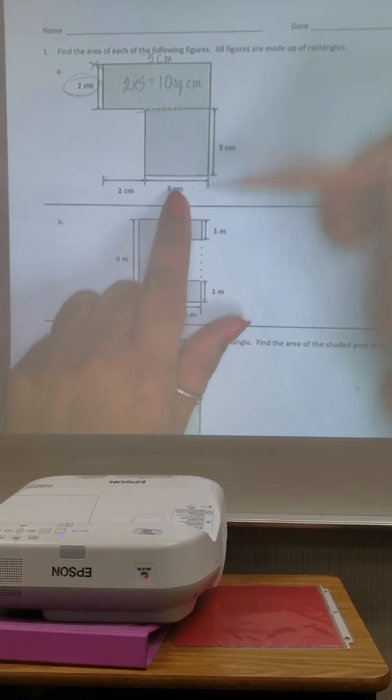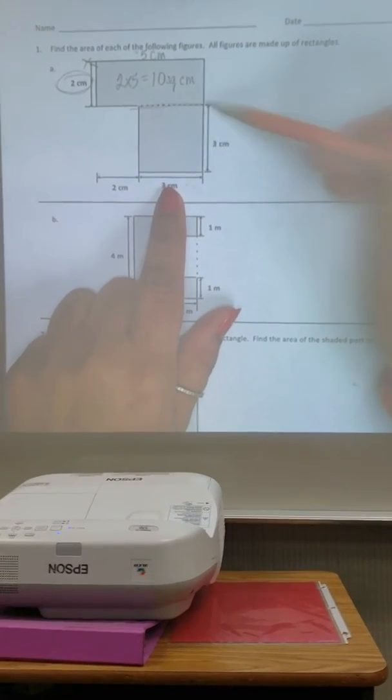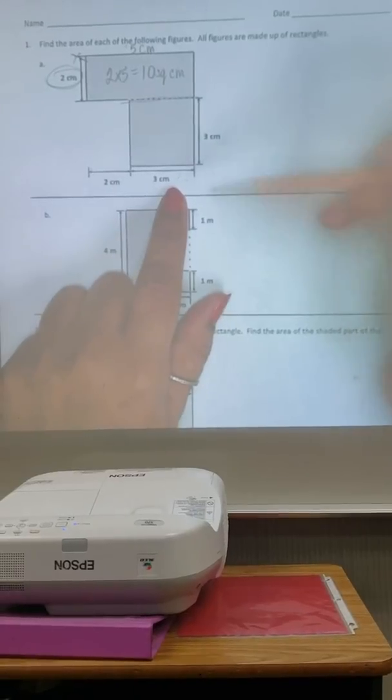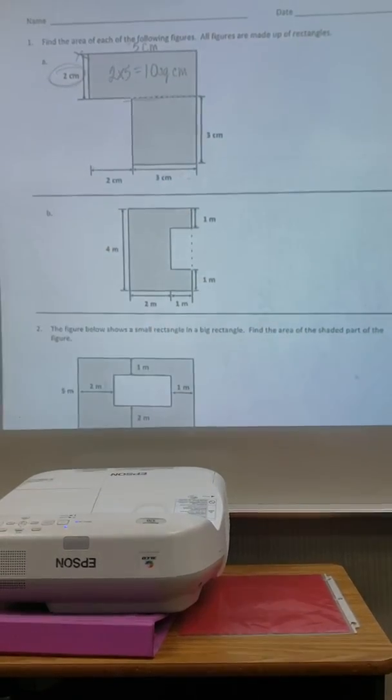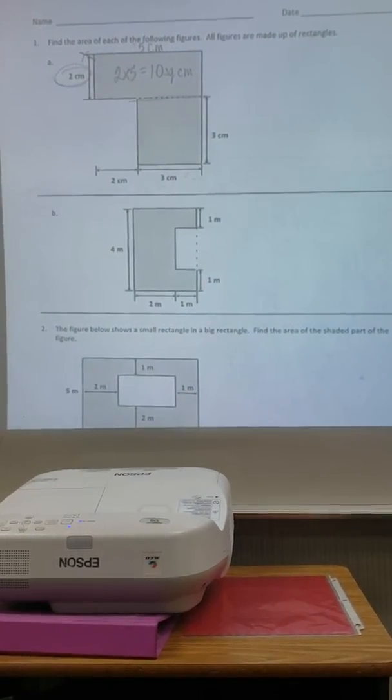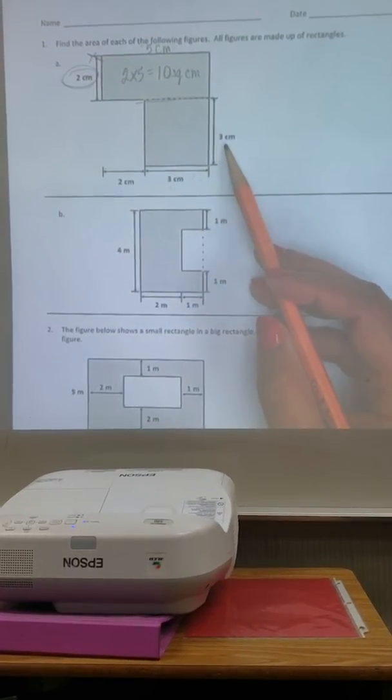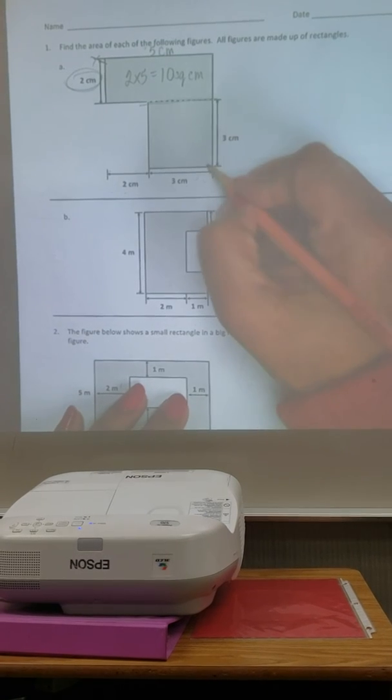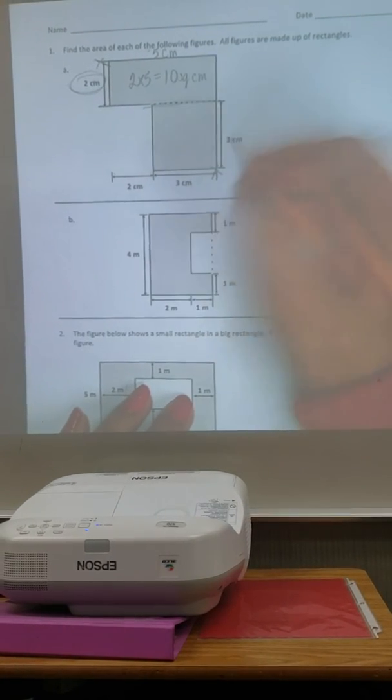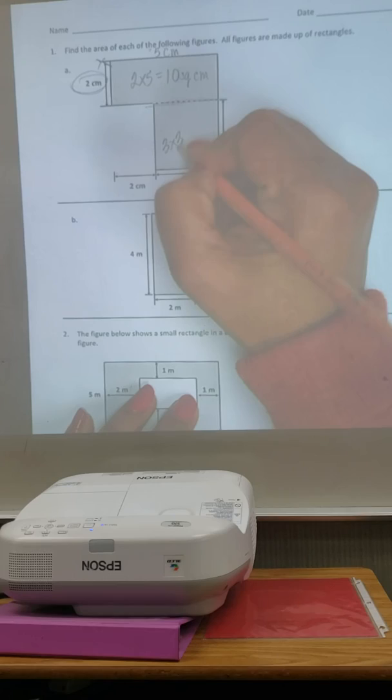Now I need to find out the area of this rectangle. It's like a square. What do I do? Multiply them. I know my side length. 3 times 3 is 9.